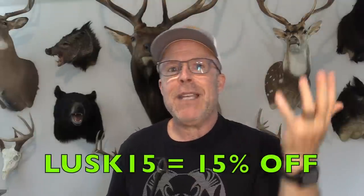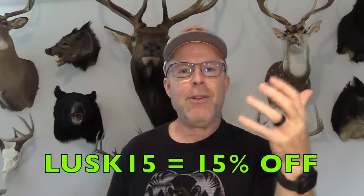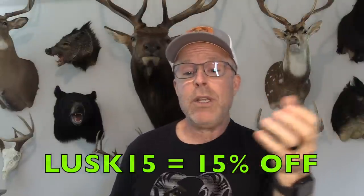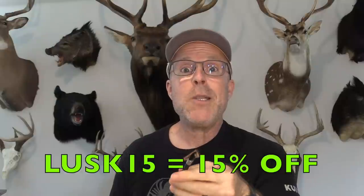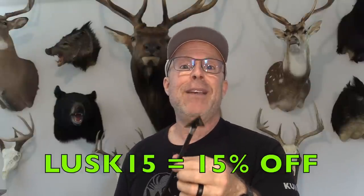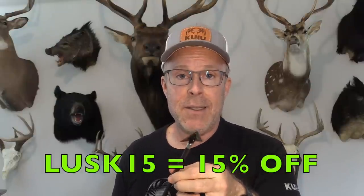The list price of these is like 30 bucks for three. But if you use my discount code, Dave even gave me a discount code. Use my discount code LUSK15 when you make an order, then you save 15%. So this head 200 grain comes out to $8 and 50 cents per head.